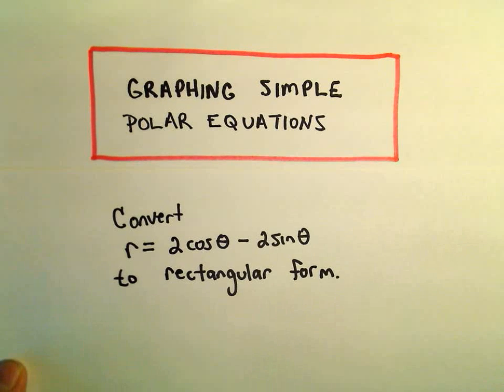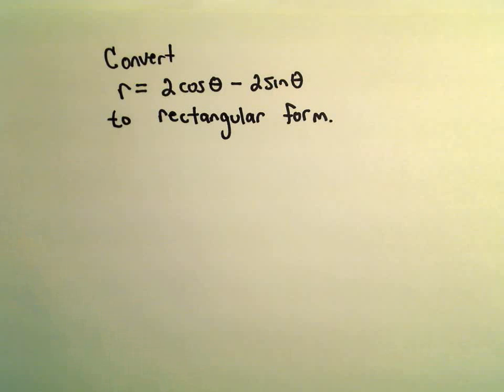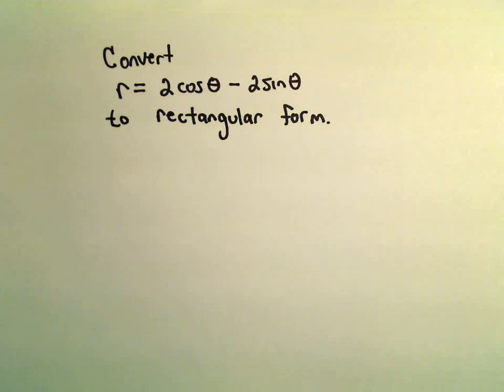Okay, so again, kind of a common trick to graph polar equations is to turn them back into rectangular form. That's what we're going to do on our equation, r equals 2 cosine theta minus 2 sine theta.